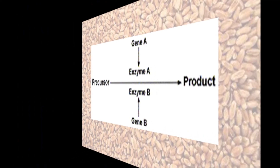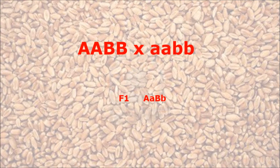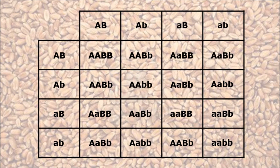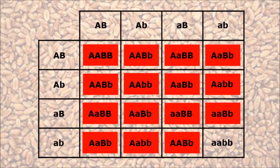When the F1 generation of homozygous coloured and homozygous white are crossed, it's the usual dihybrid cross. All the genotypes in the red boxes will produce the pigment to colour the wheat kernel. This is because the two non-allelic genes have the same role in protein production, so the proteins can be made by either of the genes alone. Therefore, only one dominant allele in either of the two genes needs to be present to produce the protein, thus expressing the dominant trait.